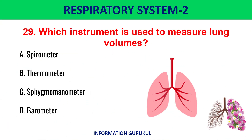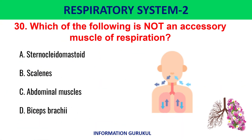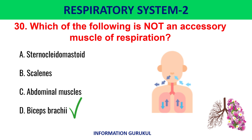Which instrument is used to measure lung volumes? Spirometer. Which of the following is not an accessory muscle of respiration? Biceps brachii.